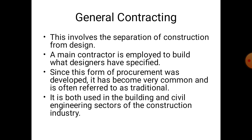Before starting on subcontracting, we first discuss what is general contracting. General contracting involves the separation of construction from the design. Here, design and construction are different contracting entities, and the main contractor is employed to build what the designer has specified. This procurement method was developed and has become very common, often referred to as the traditional method, and is used in both building and civil engineering sectors of the construction industry.